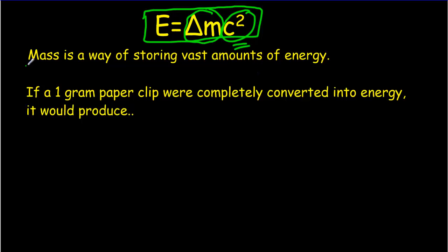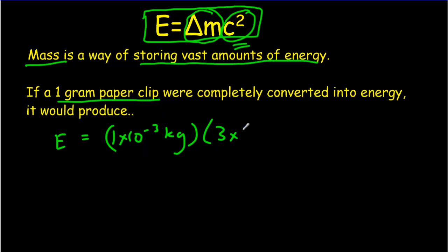What it all comes down to is that mass is a way of storing vast amounts of energy. In fact, if we have a single 1 gram paperclip, how much energy would that be worth? Well, 1 gram, that's 1 times 10 to the minus 3 kilograms. And then we've got to multiply that by 3 times 10 to the eighth, all squared. And if you do that, you're going to get 9 times 10 to the 13th joules of energy. That's about enough energy to run a city for a day. So a single paperclip, we take that mass and we can convert all of that mass into energy. It'd be a heck of a lot of energy.